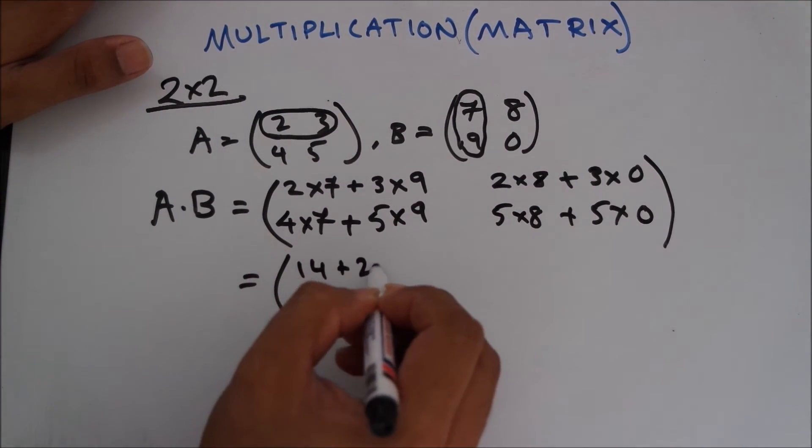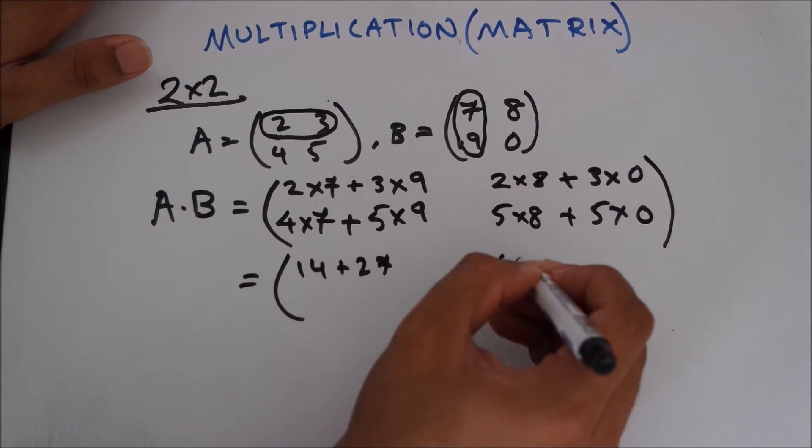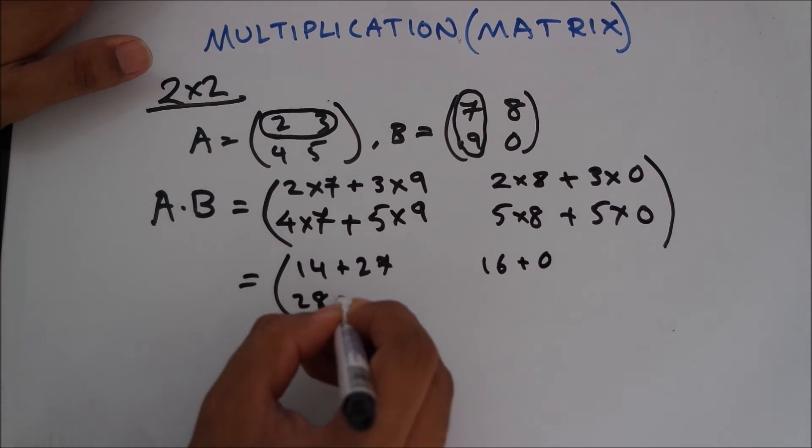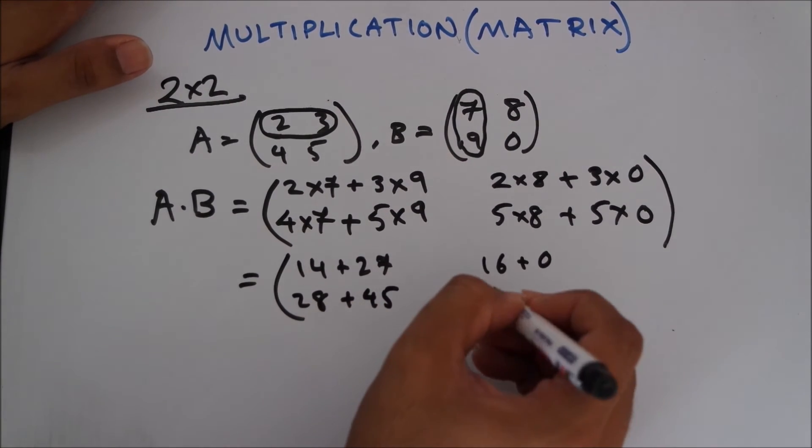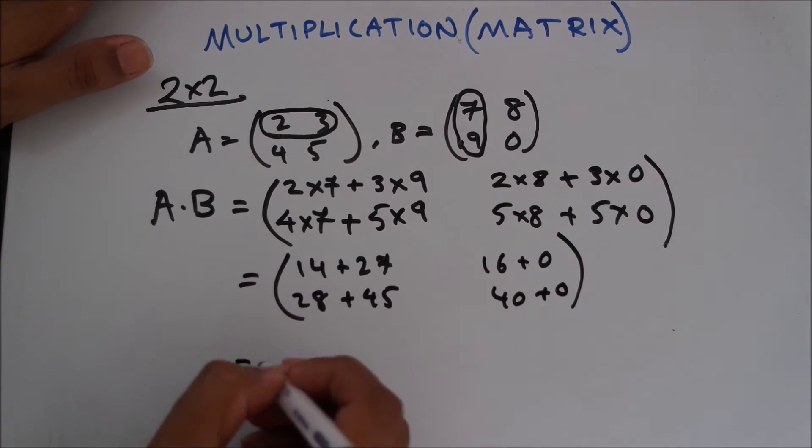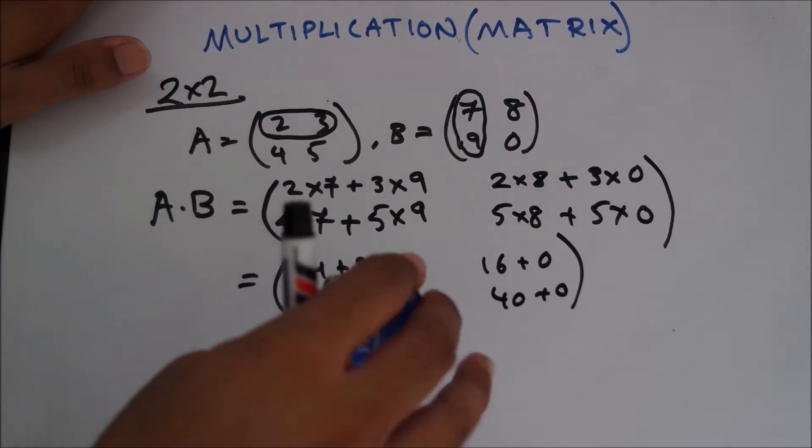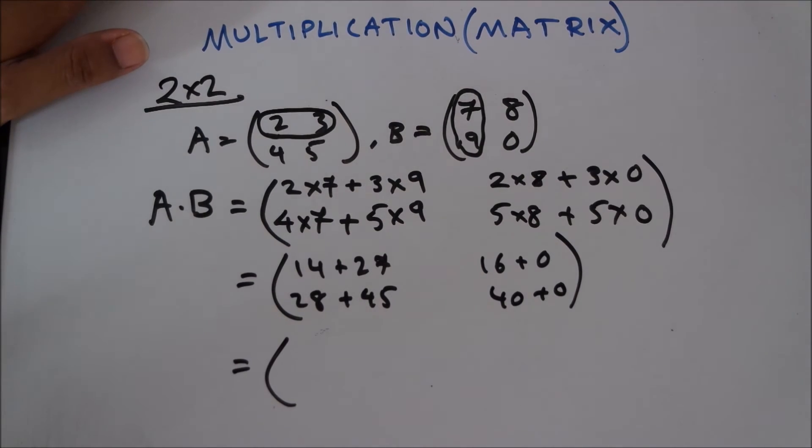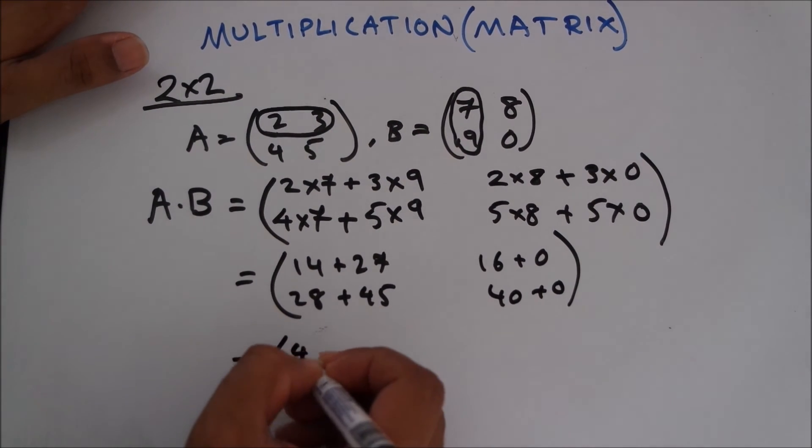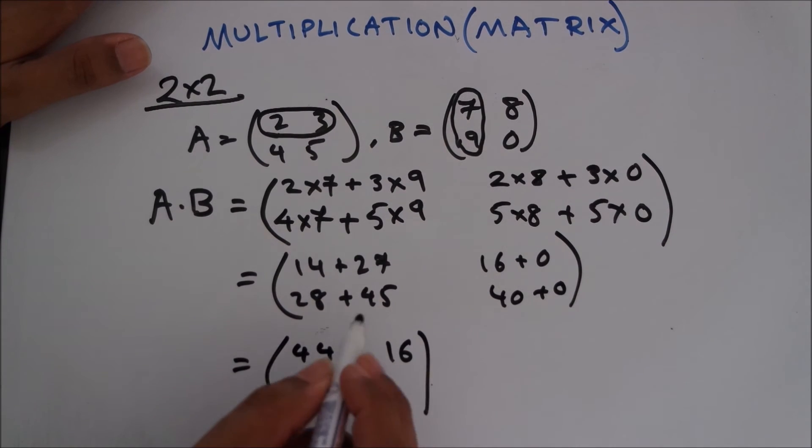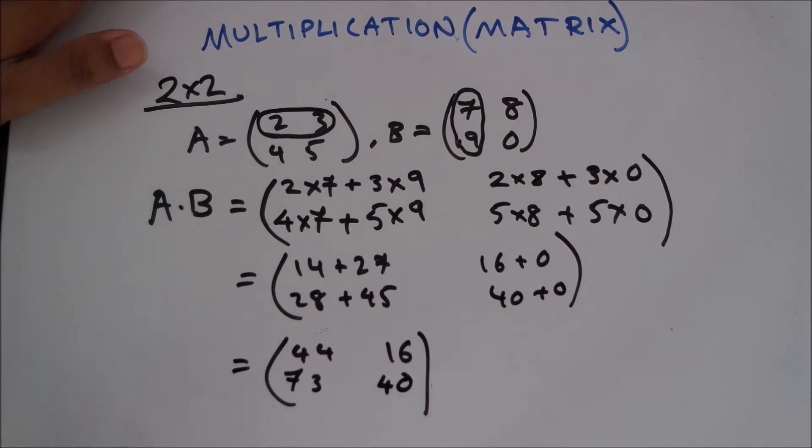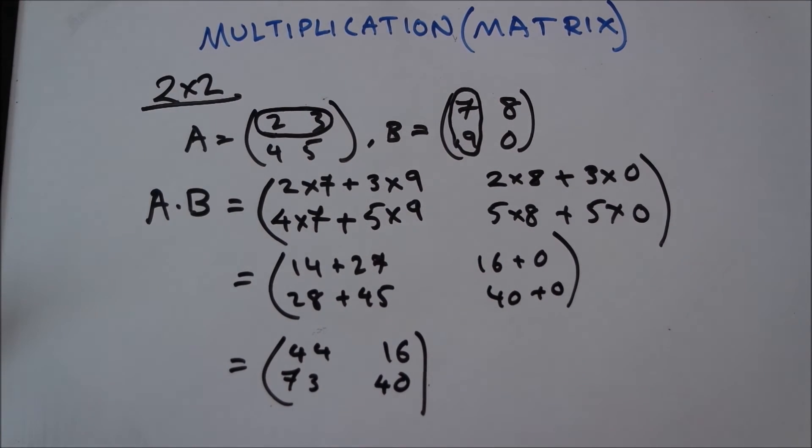And the result would be 14 plus 27, 16 plus 0, 28 plus 45, 40 plus 0, giving us 41, 16, 73, 40. So this is the answer for the first question.